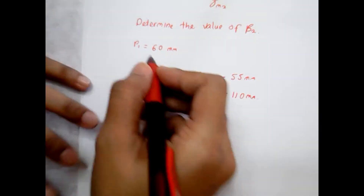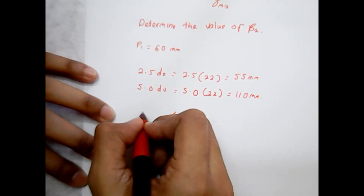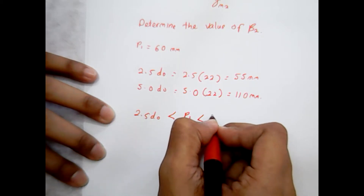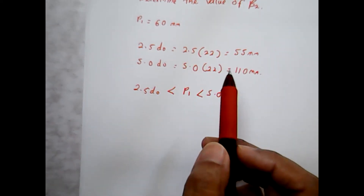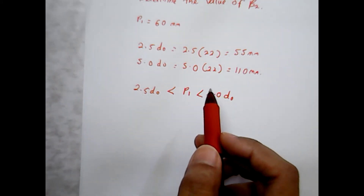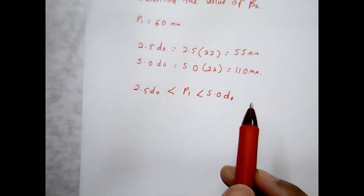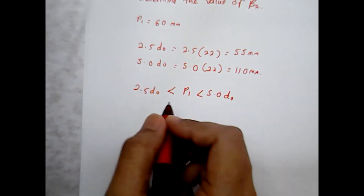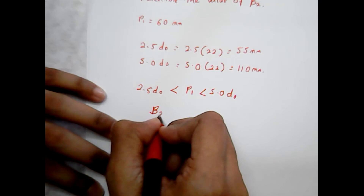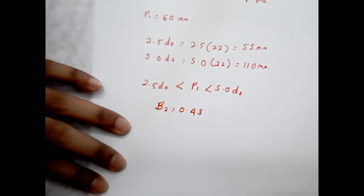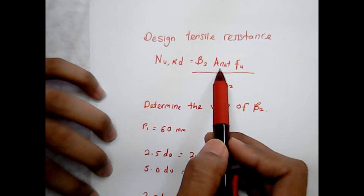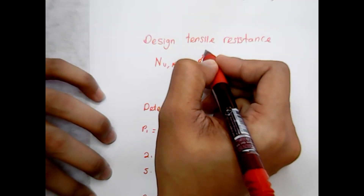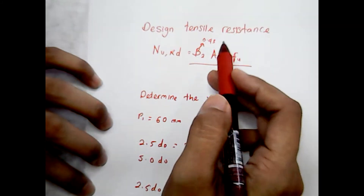We can see that P1 = 60 mm is larger than 2.5D0 (55 mm) but less than 5.0D0 (110 mm). So by interpolation, we need to determine the value of beta 2. In the table, values are only given at the limits, so when you do the interpolation, you find beta 2 equals 0.43.